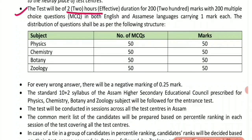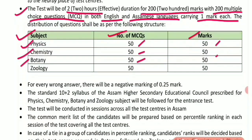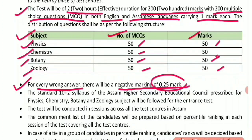The test will be two hours in duration, for 200 marks, with 200 multiple choice questions in both English and Assamese language, each carrying one mark. The distribution of questions will follow a specific structure, and for every wrong answer there will be negative marking of 0.25 marks.